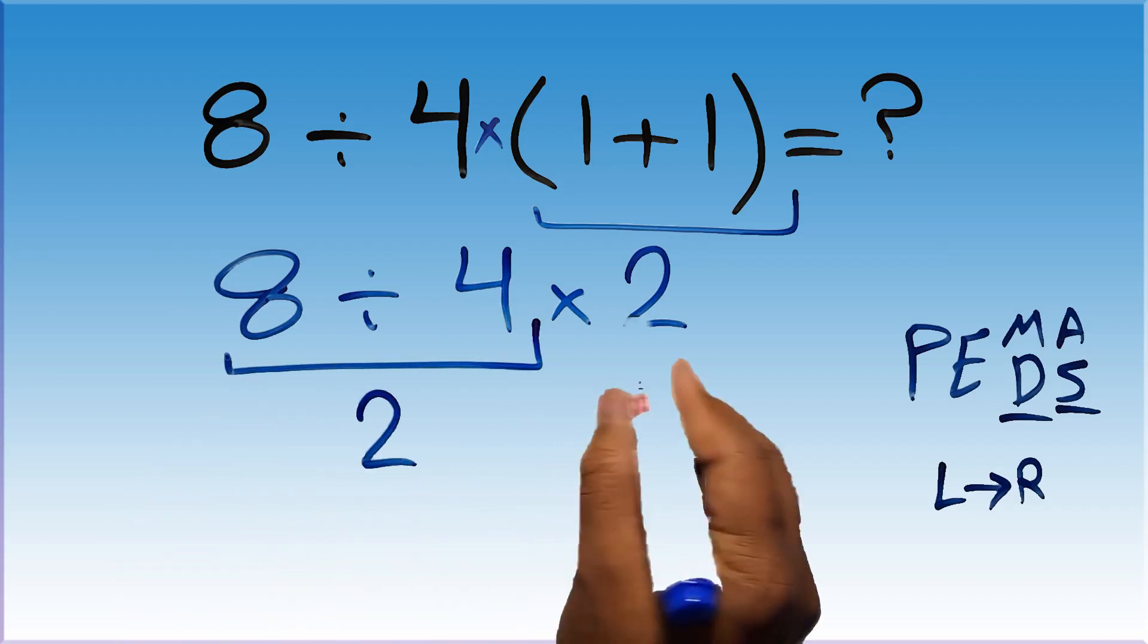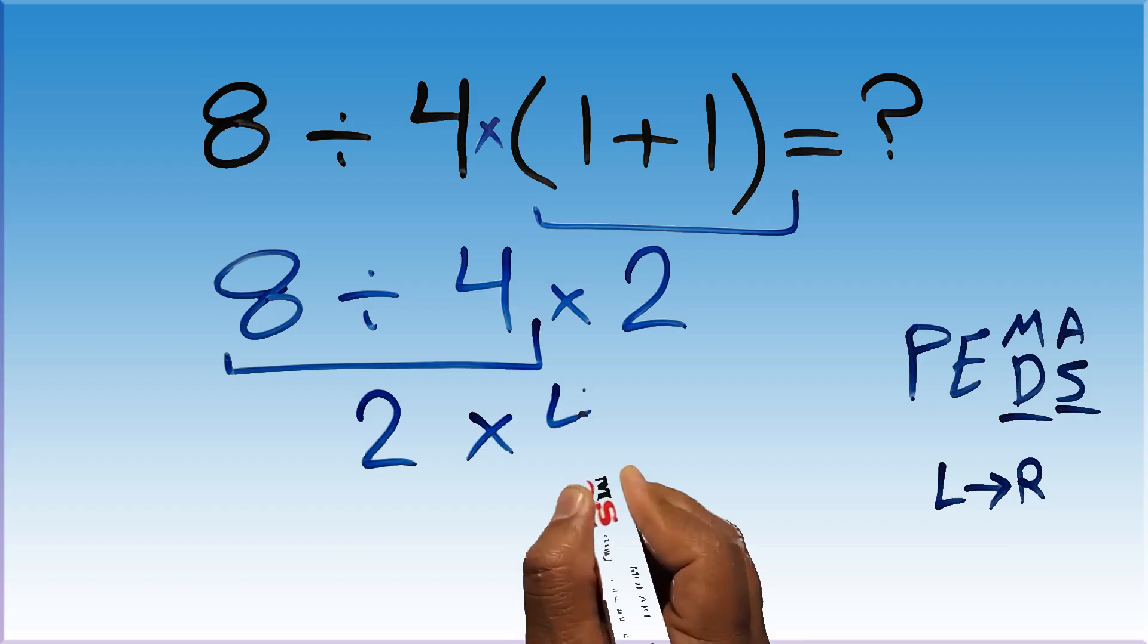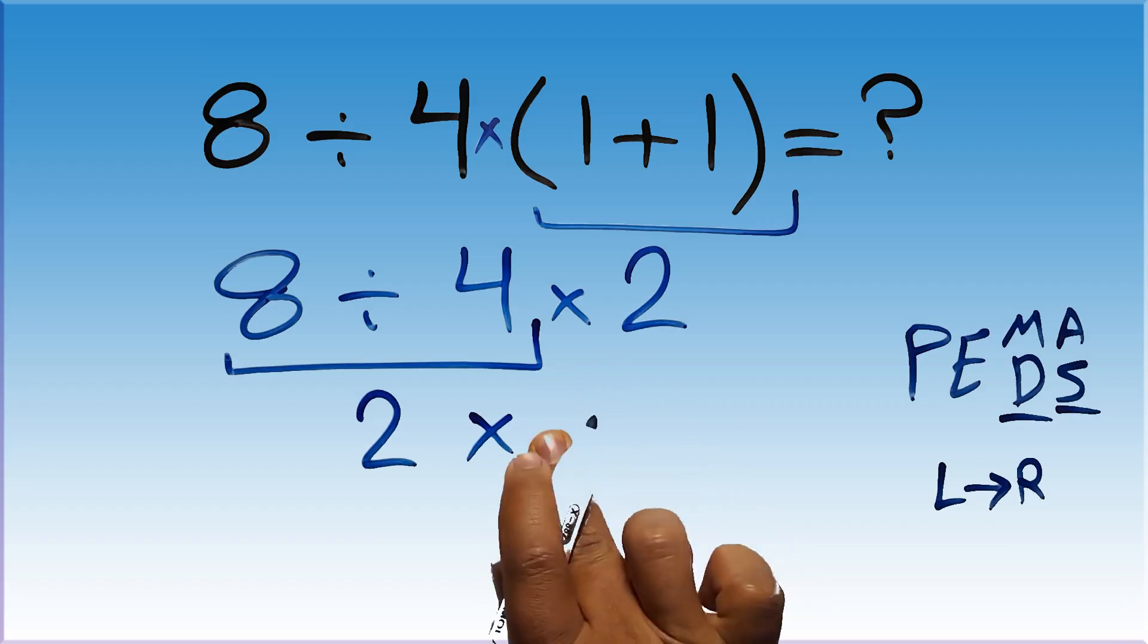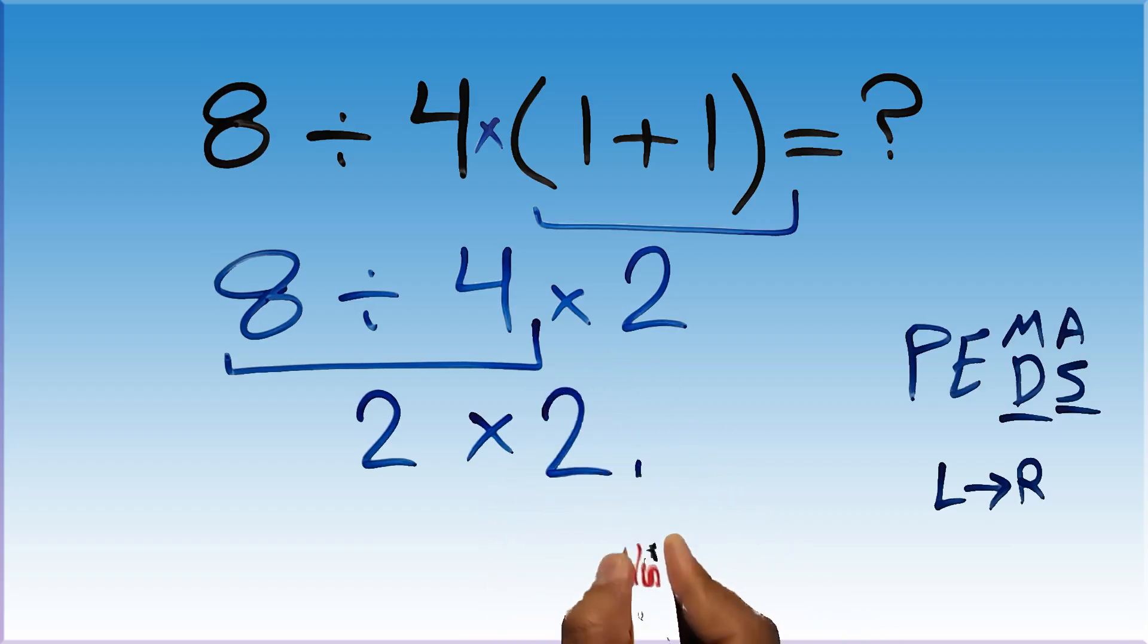So 2 times 2 which equals 4. And this is our final answer to this problem.